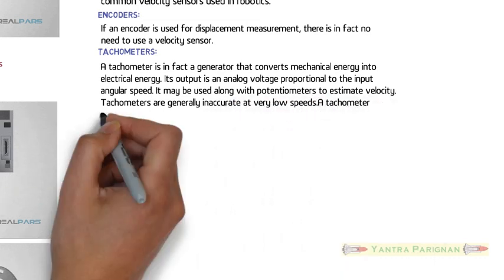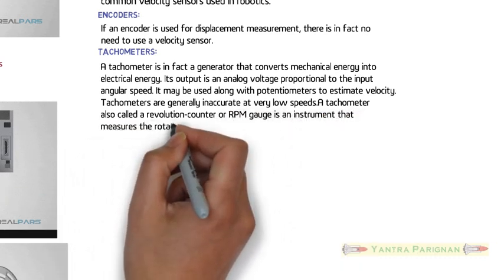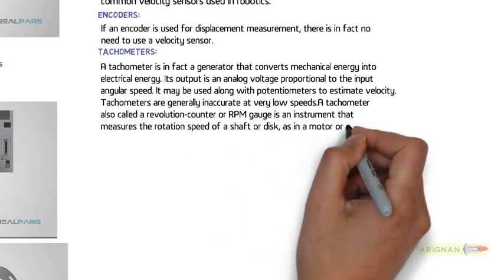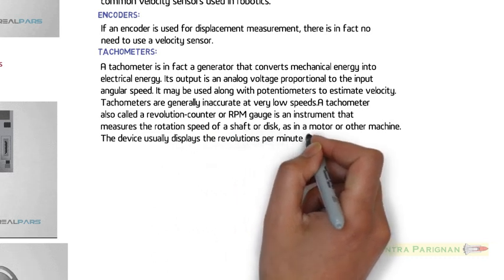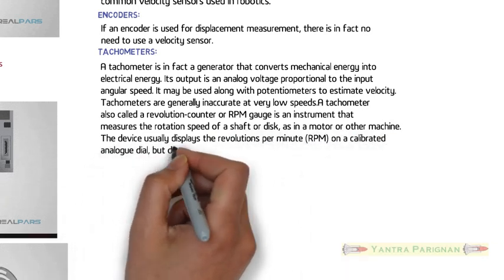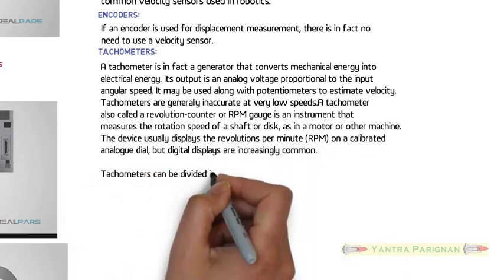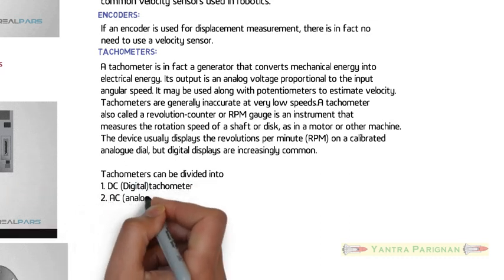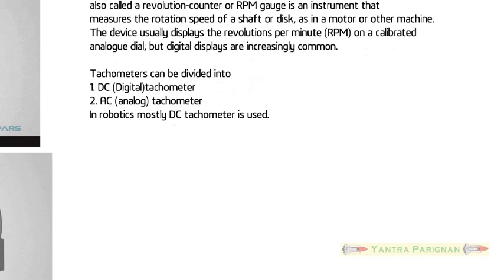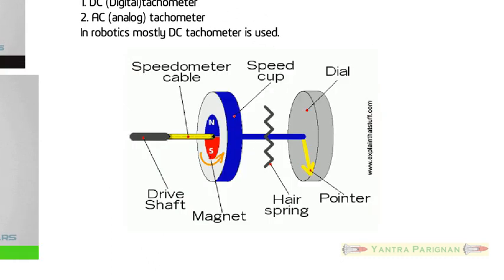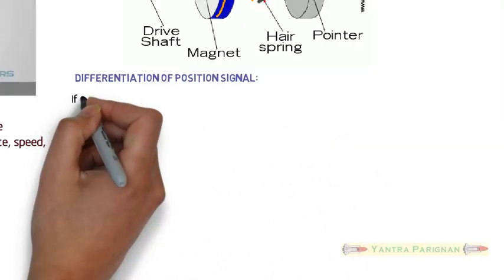A tachometer also called a revolution counter or RPM gauge is an instrument that measures the rotation speed of a shaft or disc, as in a motor or other machine. The device usually displays the revolutions per minute on a calibrated analog dial, but digital displays are increasingly common. Tachometers can be divided into DC digital tachometer and AC analog tachometer, but in robotics DC tachometer is regularly used. The figure shows the use of tachometer to measure the speed of shaft or disc in revolutions per minute.